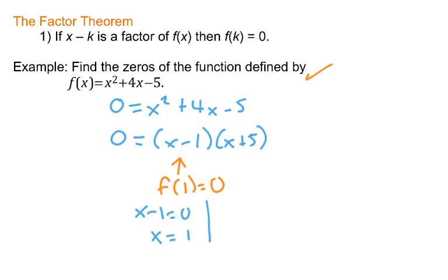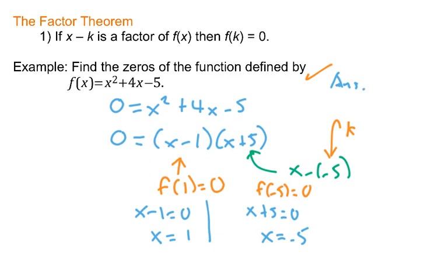When I have this x plus 5, think of it as x minus negative 5, so that negative 5 is my k, and that tells you that f of negative 5 is 0. So one way of reading the Factor Theorem is really just the zero product rule, and the zeros of this polynomial are 1 and negative 5.